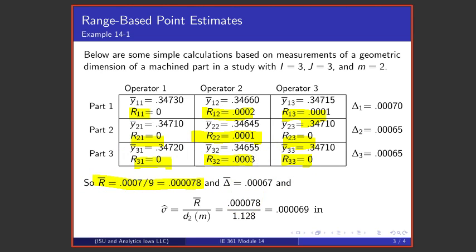If we total and average those we get 0.000078, and if we divide that by a control chart constant little d2 for a within cell sample size of 2, then this number is an estimate of the within cell or the repeatability standard deviation.